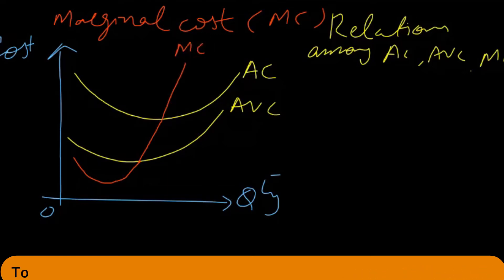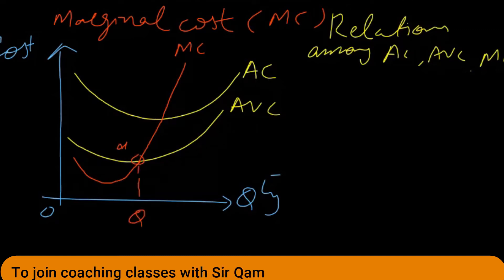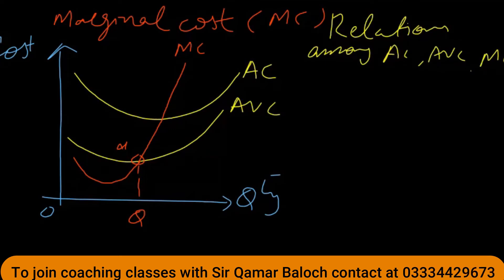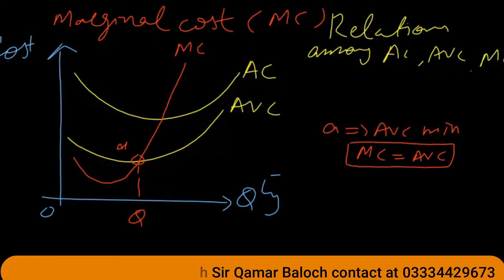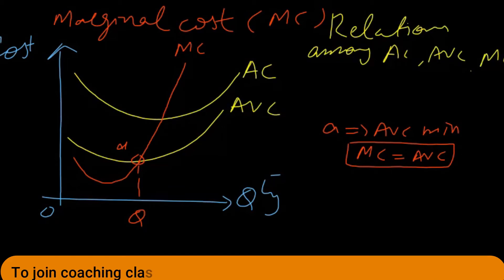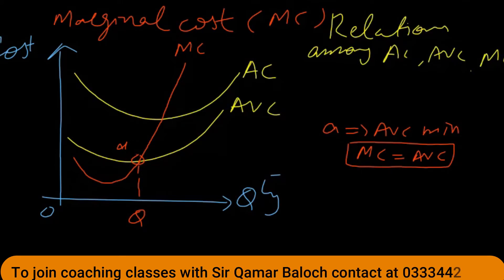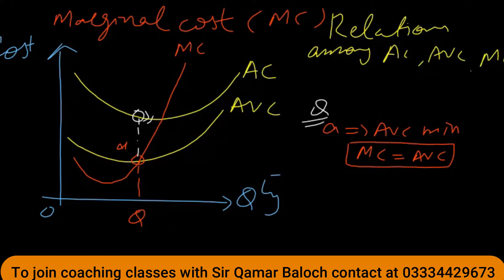At point A, we are producing output equal to Q. This is the point where average variable cost is minimum and marginal cost is equal to average variable cost. The point where marginal cost equals average variable cost is the minimum point of average variable cost. If we extend the perpendicular at output Q, we can see that average cost is still falling at that point.